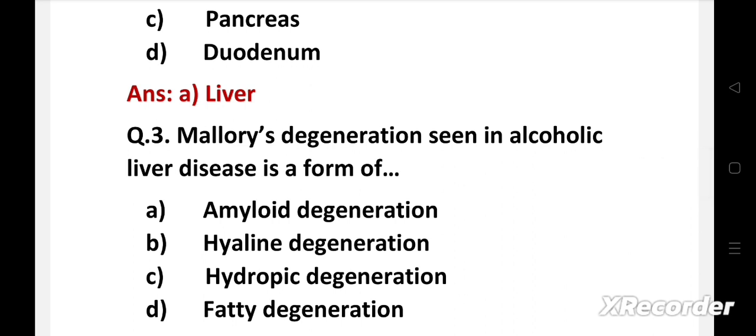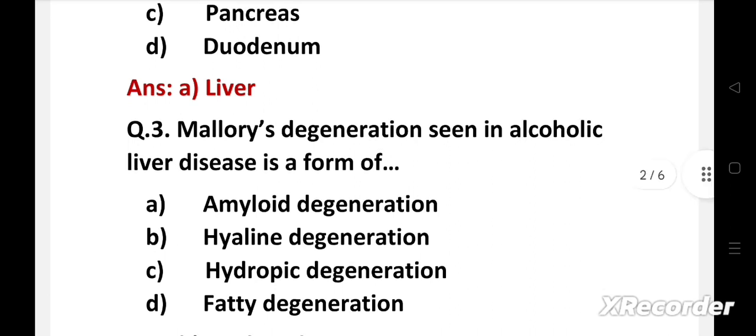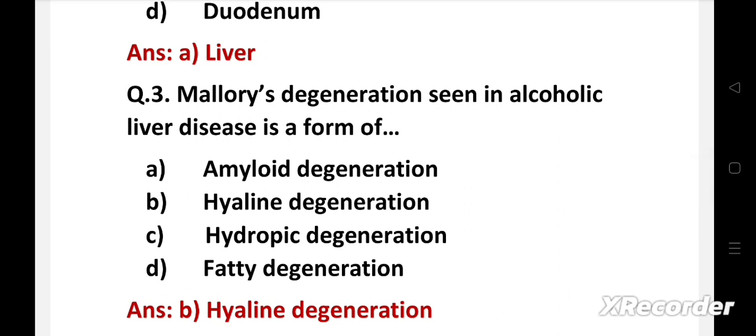Next question: Mallory's degeneration, seen in alcoholic liver disease, is a form of — option A: amyloid degeneration, B: hyaline degeneration, C: hydropic degeneration, D: fatty degeneration. The right answer is option B, hyaline degeneration. Mallory's degeneration seen in alcoholic liver disease is a form of hyaline degeneration.